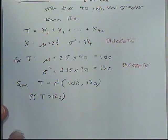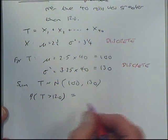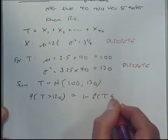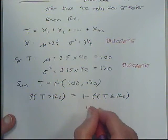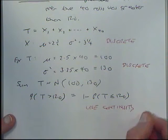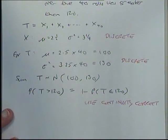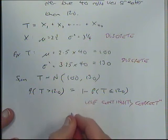First of all, greater than 120 would normally, what would I do? 1 minus. So we'll put 1 minus. Now, this is the bit where you have to use a continuity correction. Because I am going from something which was discrete to something which is continuous, and I have to adapt.